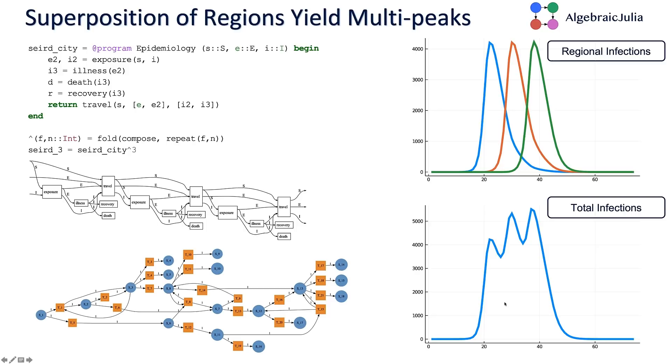For example, if we want to take the n-fold product, powers of a system, we can just define, you know, we can use fold and compose and repeat. This is regular Julia. This program is not Julia code—it's syntax for describing morphisms in the category.